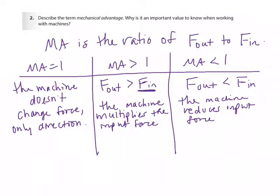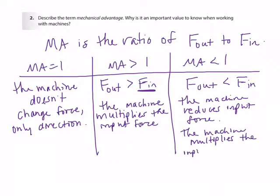Why would you use a machine that reduces your input force? Because if it reduces the input force, it must do the opposite to the input distance — the machine multiplies the input distance. So if your input force is really large, your input distance is really small, and the machine takes that small input distance and makes it really large, covering a large distance for you. That explains why you'd use a machine with a mechanical advantage of less than one.